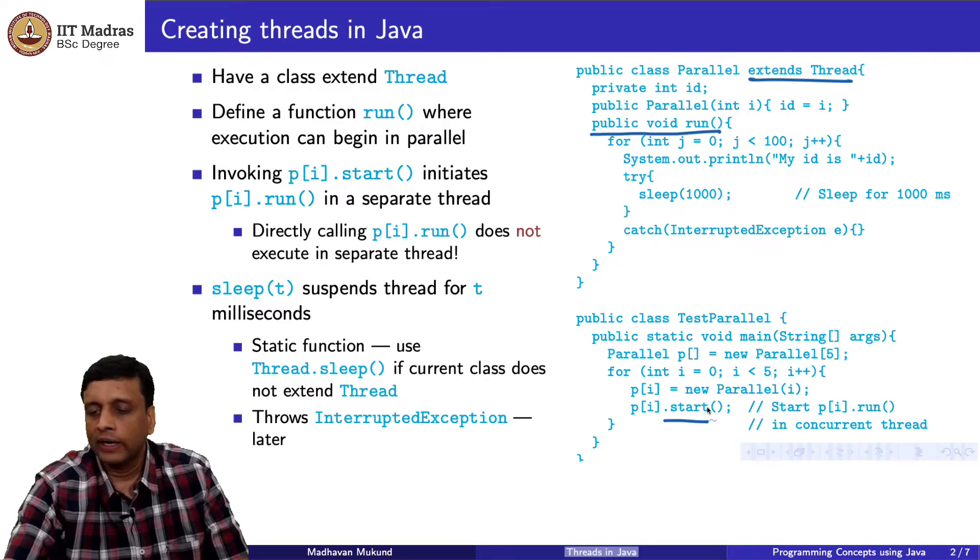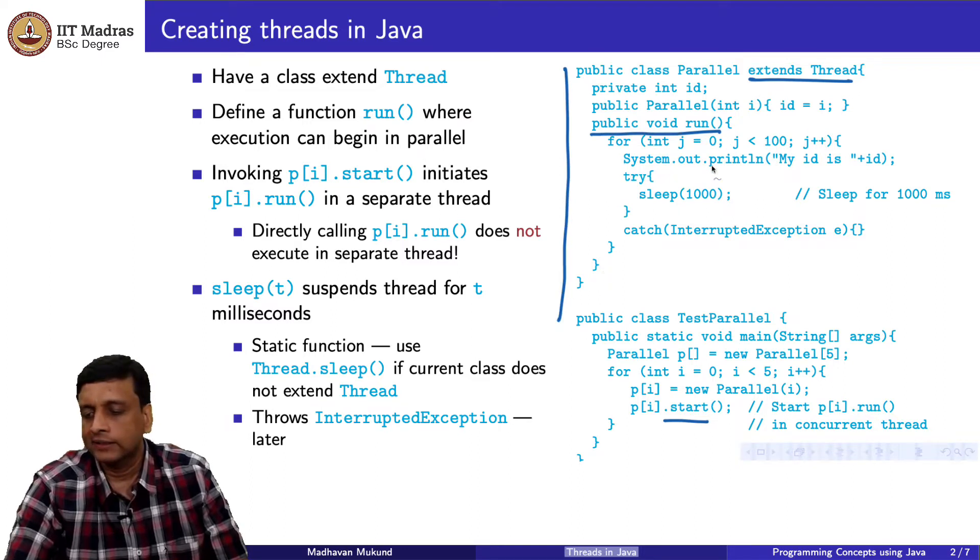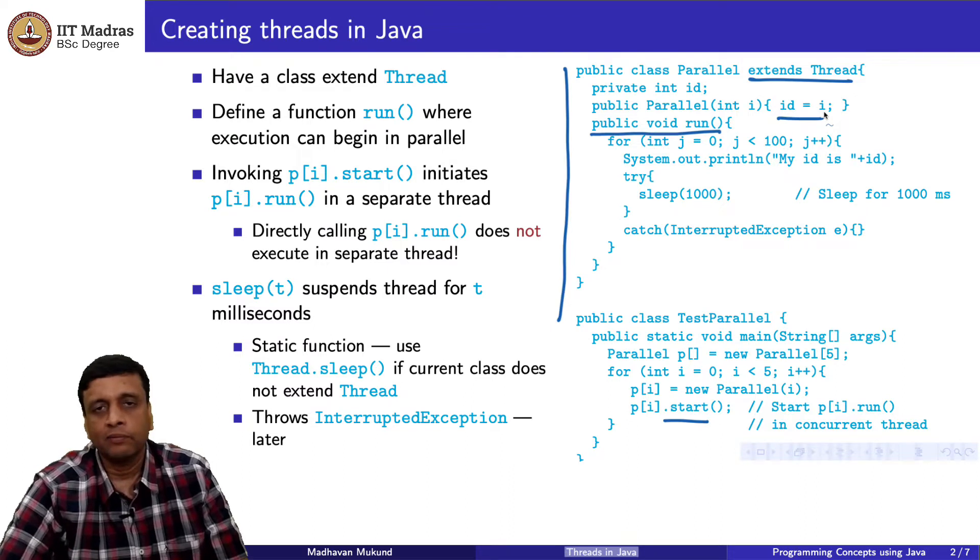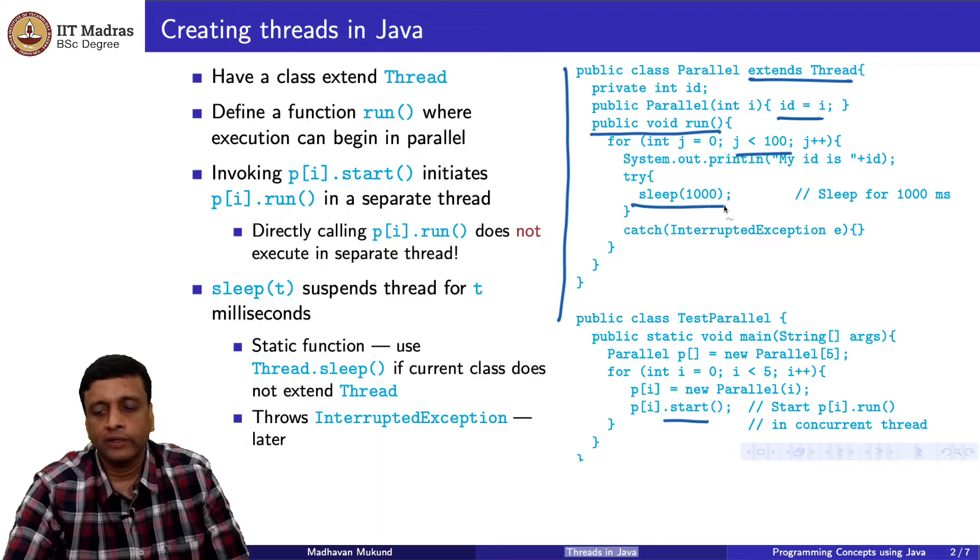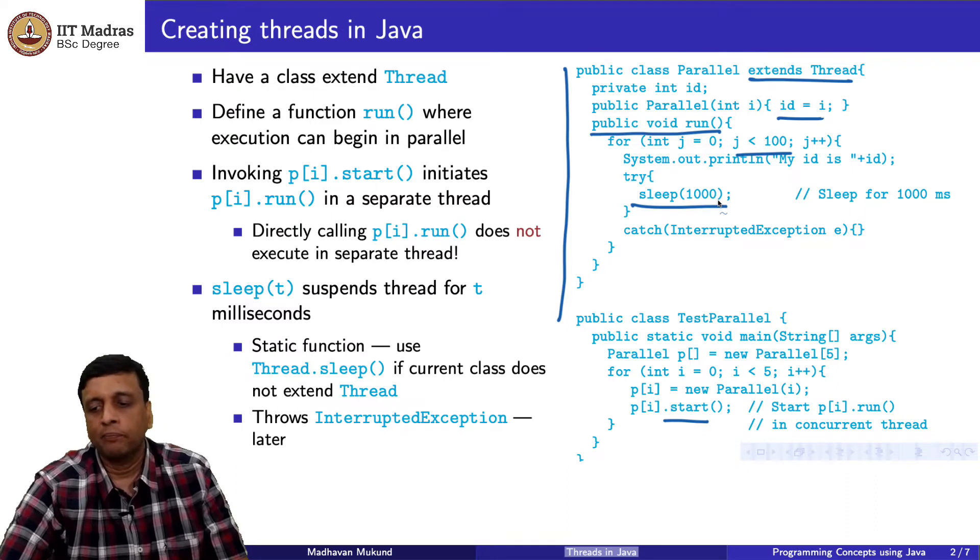Here is how you do it. You have this class which extends Parallel and in this particular case, what it does is it prints out. It has only one instance variable which is its id and it just prints that out 100 times. And in between it sleeps for 1 second, 1000 milliseconds. This is what each object of type Parallel does.